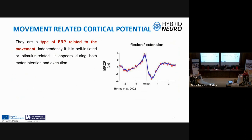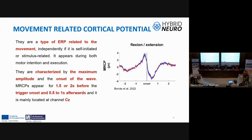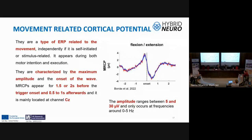Movement-related cortical potentials are electrical brain signals that occur during motor preparation or execution of voluntary movements. They are characterized by maximum amplitude and wave onset. The onset is when the subject begins the movement, but this potential appears 1 to 2 seconds before and after the movement.